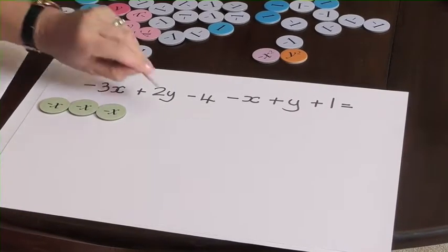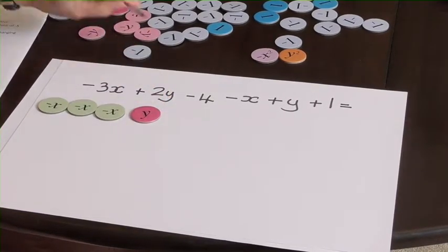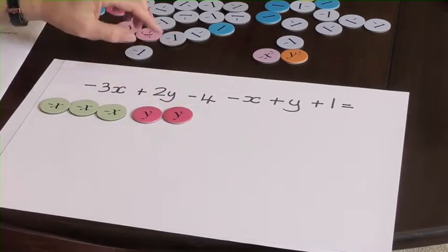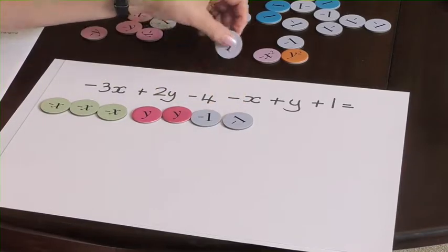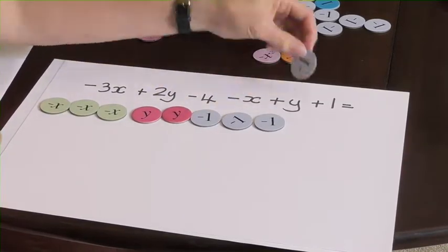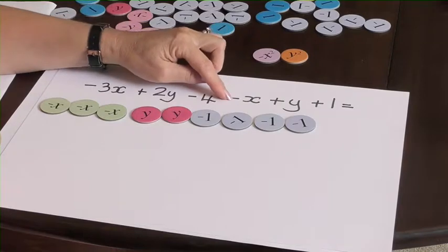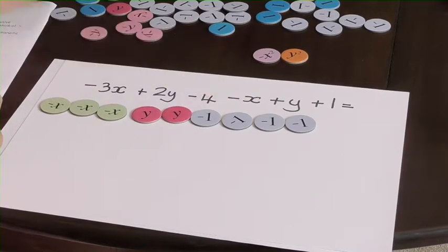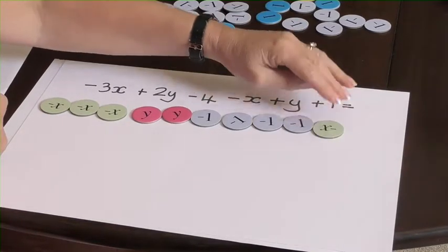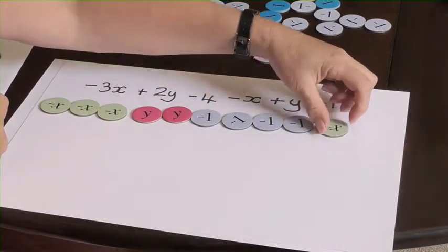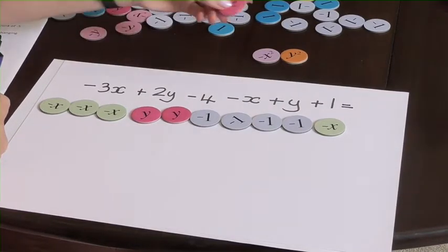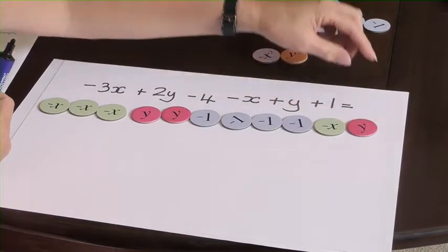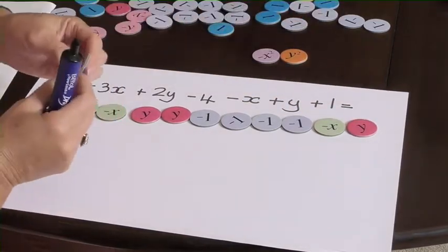Negative 4: one, two, three, four. Plus a negative x, plus a y, plus a 1.